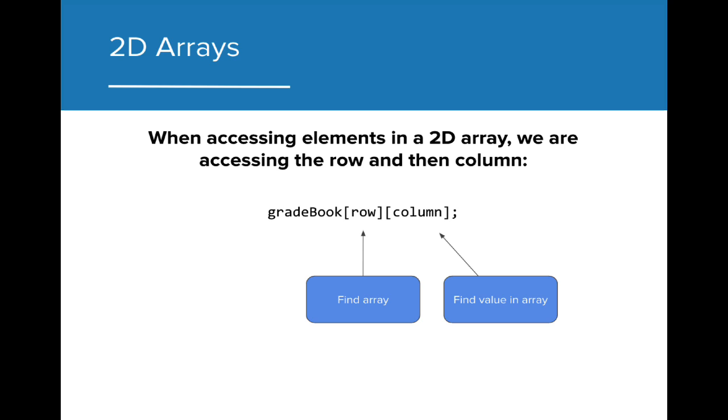When accessing elements in a 2D array, we access the row and then the column of the array. Generally speaking, the row of the 2D array is going to be an array, and the column is a value that is being stored in that 1D array.